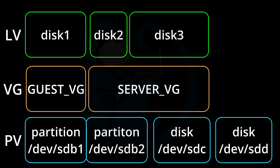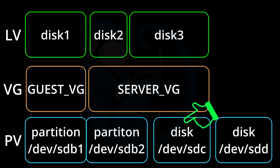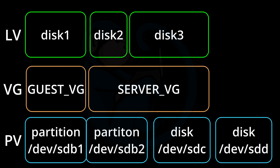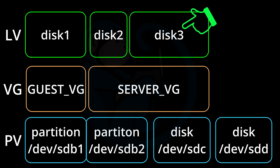In this example, we have four physical volumes: /dev/sdb1, /dev/sdb2, /dev/sdc, and /dev/sdd. We have partitions from one physical disk, and then we have two whole disks — and we can use them both equally as physical volumes. On these physical volumes, we can create one or more volume groups. So in our example, we're going to create the guest_vg and server_vg groups. And in each volume group, you can create one or more logical volumes — in our example, the logical volumes named disk1, disk2, and disk3.